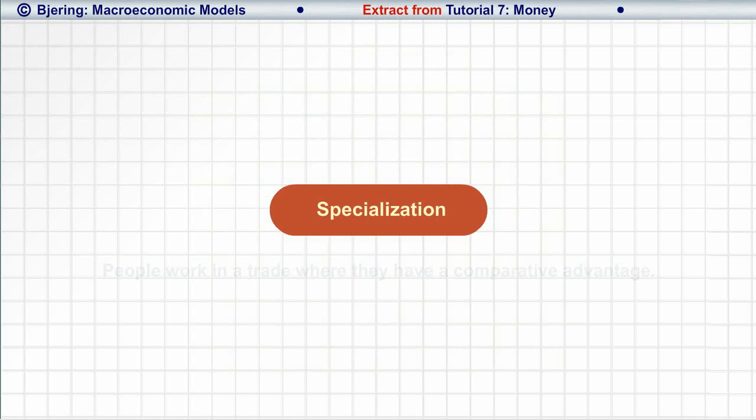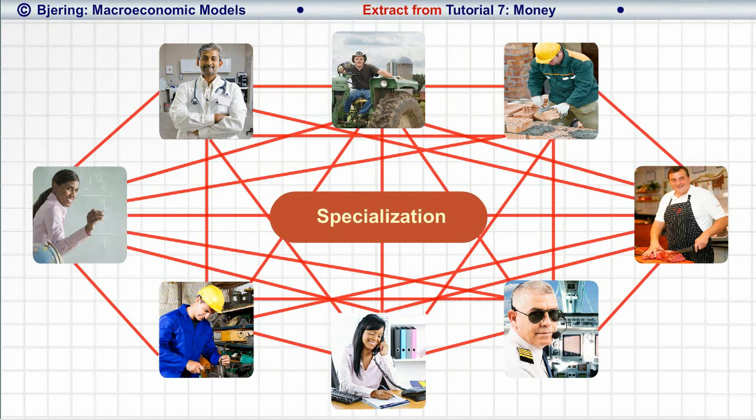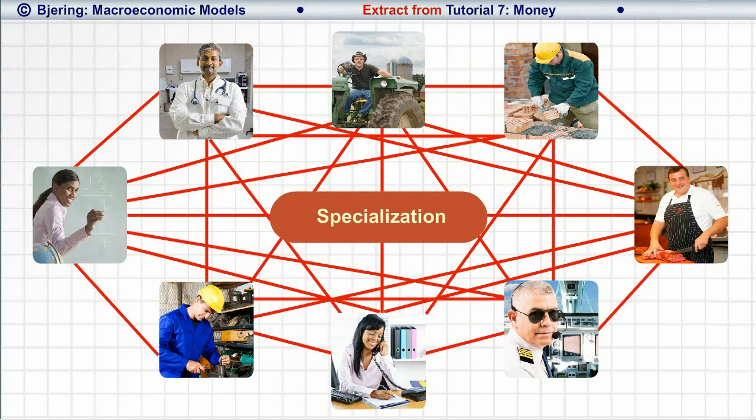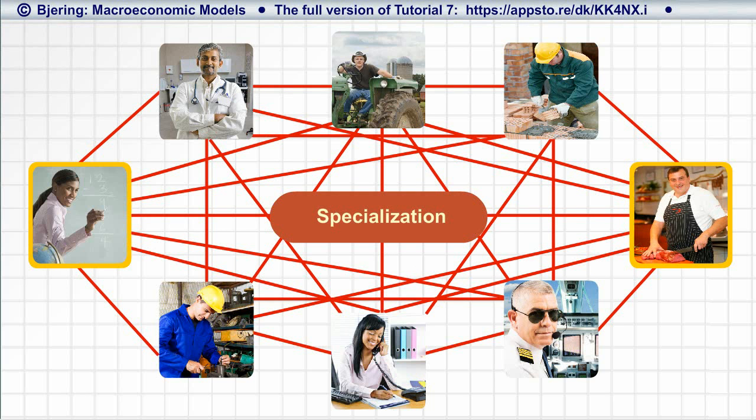With specialization comes a need for exchange of goods and services among all the specialists. However, it's quite complicated and time-consuming for a hungry schoolteacher to find a butcher willing to barter a steak for teaching. So, fulfilling people's needs by bilateral barter is not efficient.